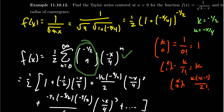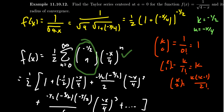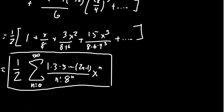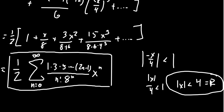It's worth noting this series isn't actually alternating, because the (-1)^n factor and the negative k value balance each other out. To finish, we need the radius of convergence: we need |-x/4| < 1, which means |x/4| < 1, so |x| < 4. Therefore this binomial series converges with a radius of convergence of four.